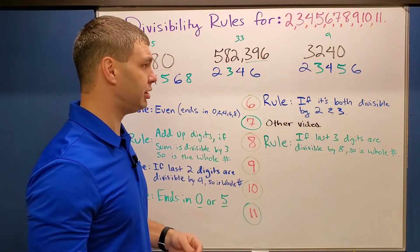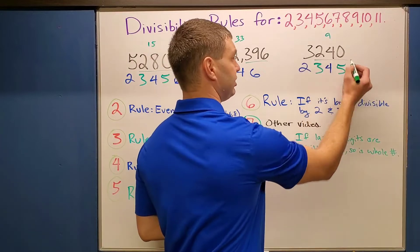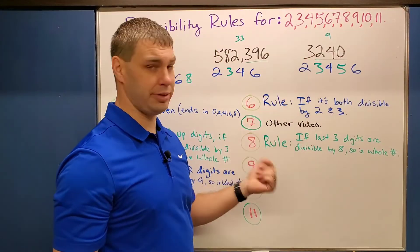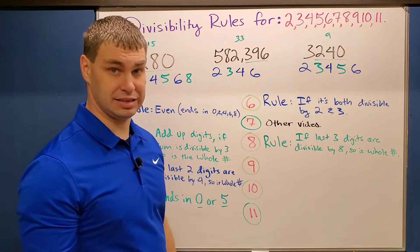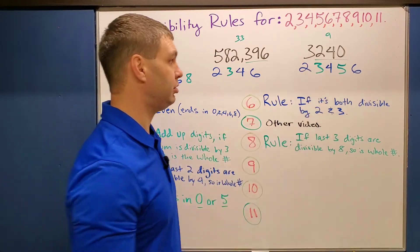And then our last number, 240 for the last three digits. Well, eight goes into 24 three times, and then since there's a zero at the end, you know that it is going to be divisible by 240.